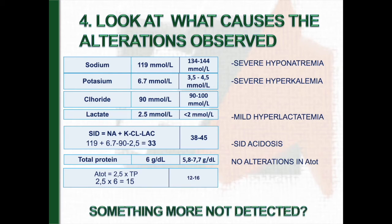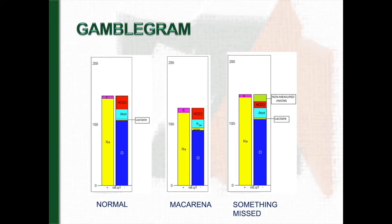Could be something more? The graphic presentation of the electrolytes and positive and negative charges is called Gamblegram. This graphic presentation could help us to see if there are any alterations in unmeasured ions, because there is a gap, a difference between the positive and negative charges. In our case, the positive and negative charges are more or less equal. This leads to interpreted that there are no changes in non-measured ions.